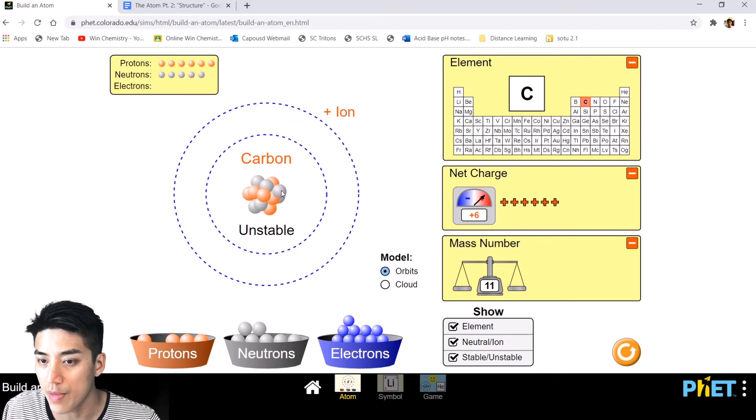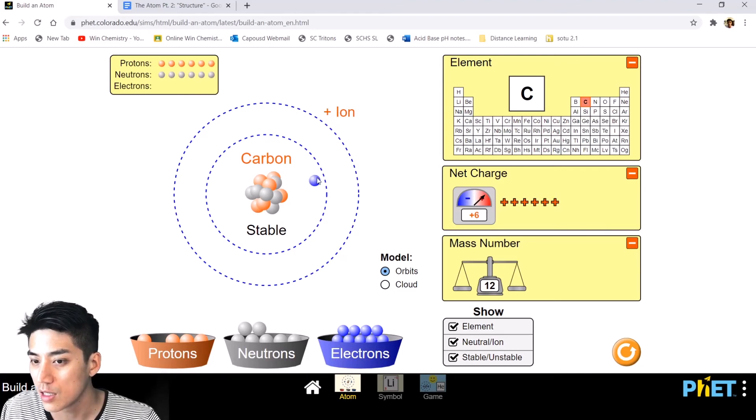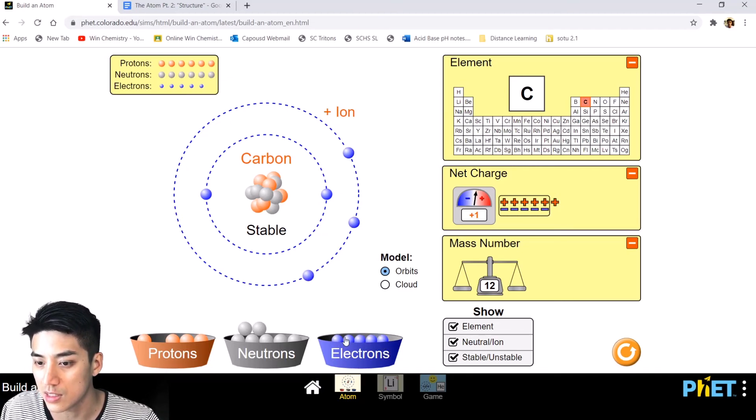It just needs more neutrons like I was explaining before. And it turns out a carbon with a mass of 12, so six protons and six neutrons, is stable. But it's still an ion because it has a net charge. Okay, so again, to offset the charge, I need to throw in electrons. And it turns out I will need a total of six electrons. So now everything is perfect.